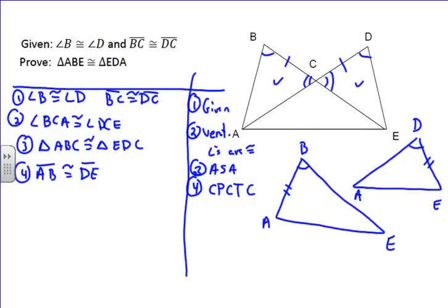So, AB and DE are corresponding. You know, you can see it right here. AB and DE, they're in the same place in our congruent statement. And so, they are congruent.